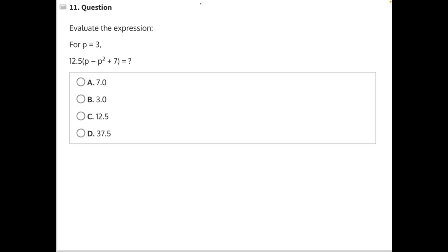Evaluate the expression for p equals 3. Here, we are going to need to substitute in the value of 3 for every variable p that we see. So when we go to rewrite this expression, we'll have 12.5 times, instead of p minus p squared, we'll have 3 minus 3 squared, plus 7.